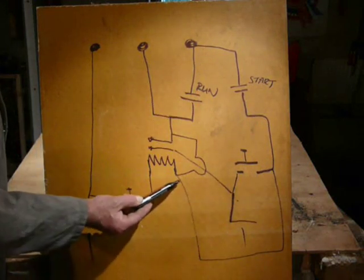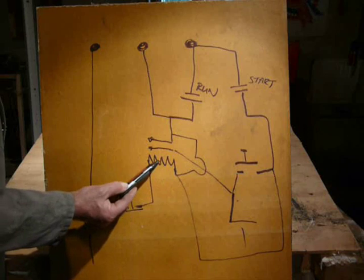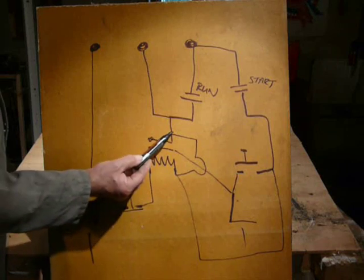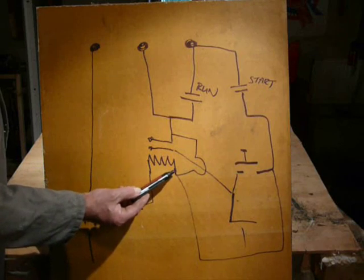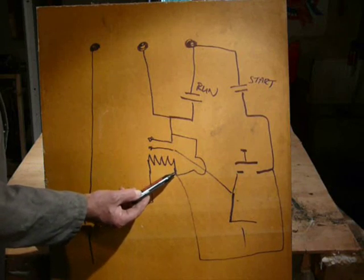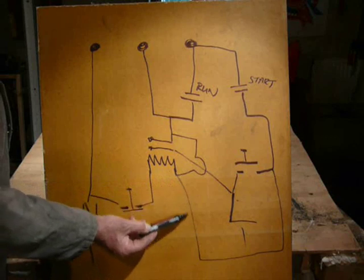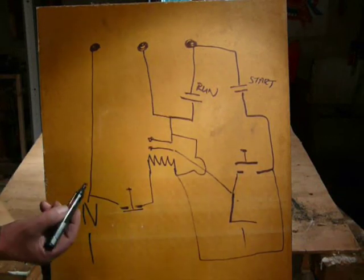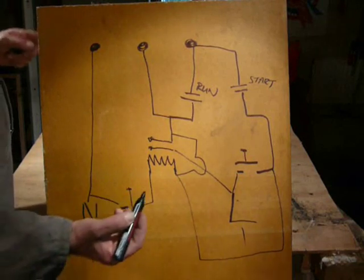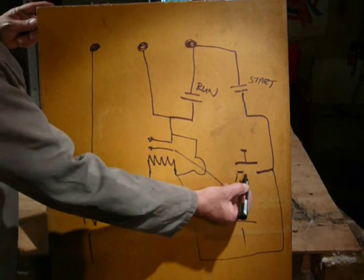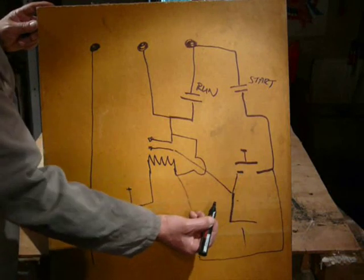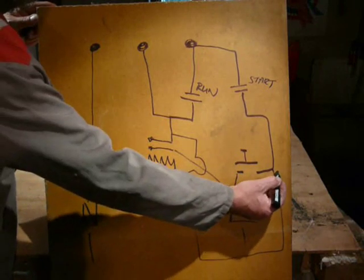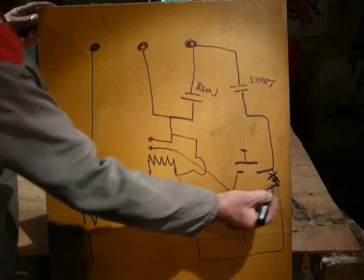It also goes along through this loop, energizes the coil, pulls the relay in, and then the feed goes back through. Well at that point that feed can go back down there and through to the start. That's just me being a bit lackadaisical. What we actually have here is a double pole switch, so therefore that's not connected there.